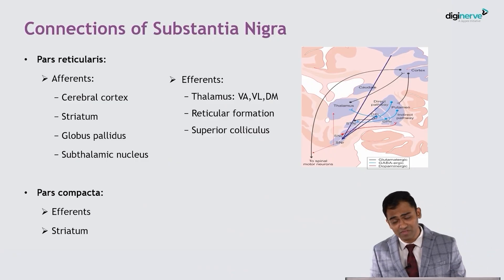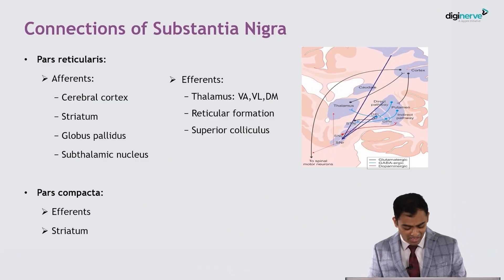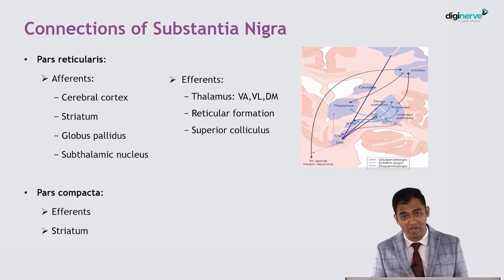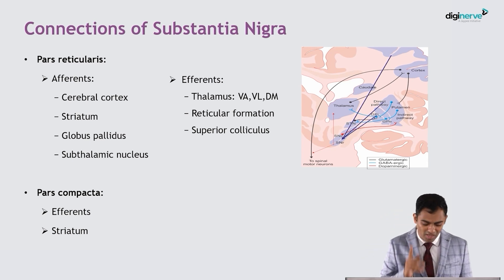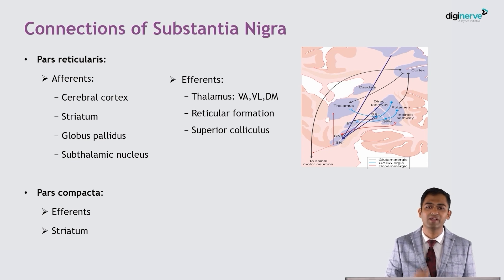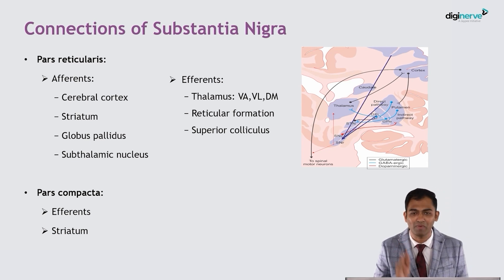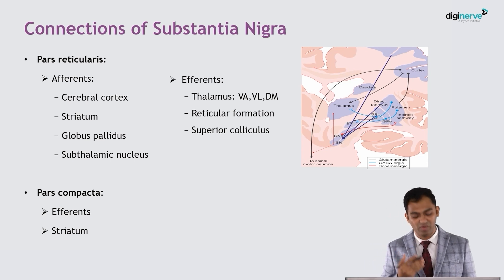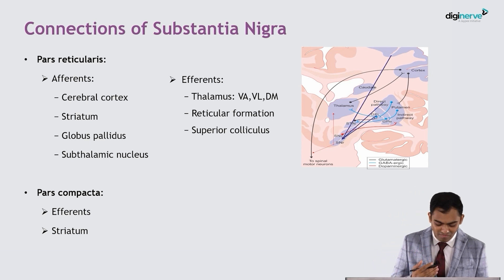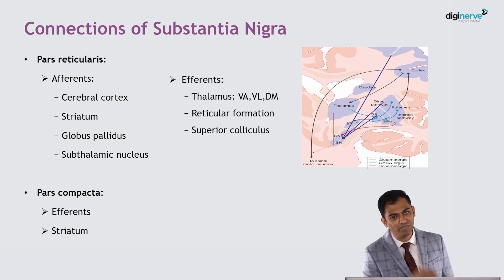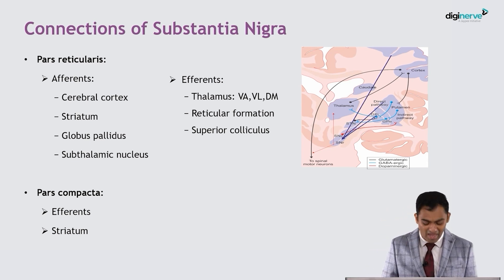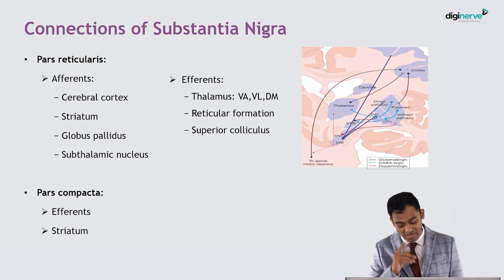Now the connections of the substantia nigra — pars reticularis and pars compacta. Very important to remember: pars compacta only has efferents, and those go directly to the striatum as the dopaminergic efferents. Pars reticularis will receive afferents from the cerebral cortex, from the striatum, from the globus pallidus, and from the subthalamic nuclei.